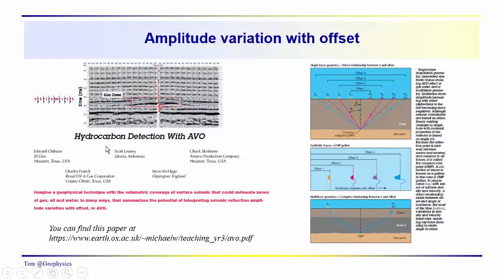A good general paper, Hydrocarbon Detection with AVO, Amplitude Variation with Offset. Some people refer to it as Amplitude Variation with Angle. You can find this paper at this link down here.